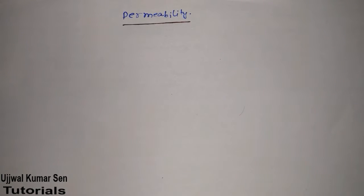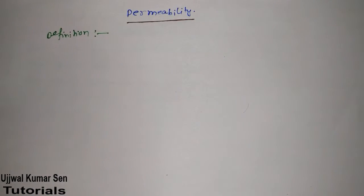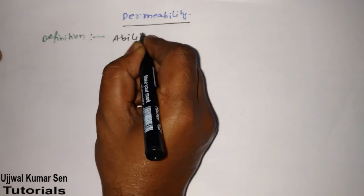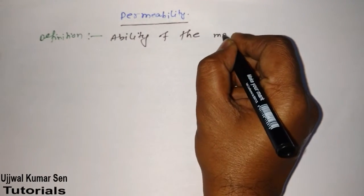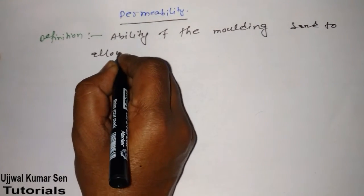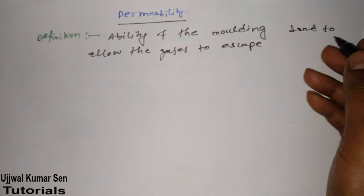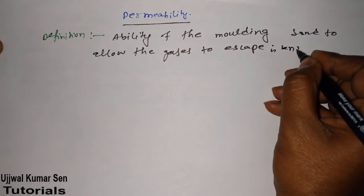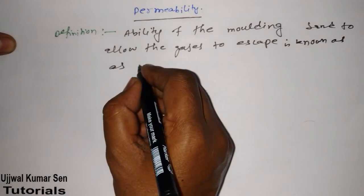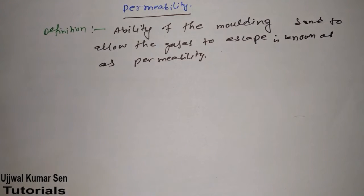What is permeability? Let me share the definition so you will understand. The definition is: permeability is the ability of the molding sand to allow the gases to escape. This ability of the molding sand to allow gases to escape is known as permeability.